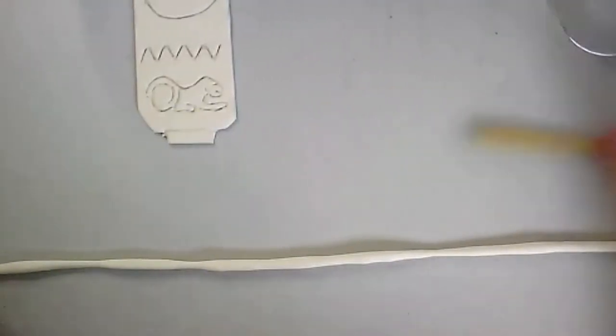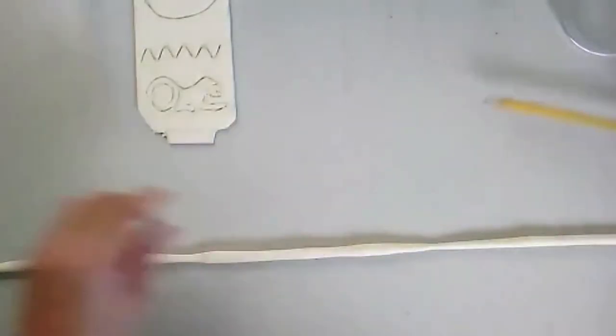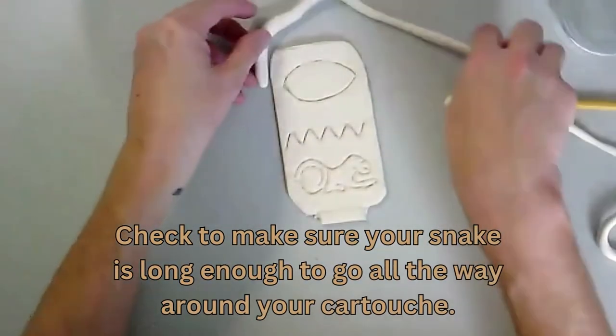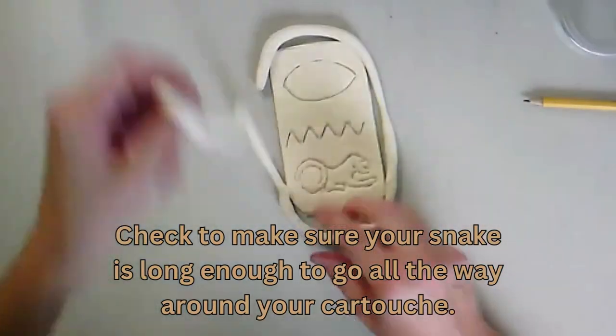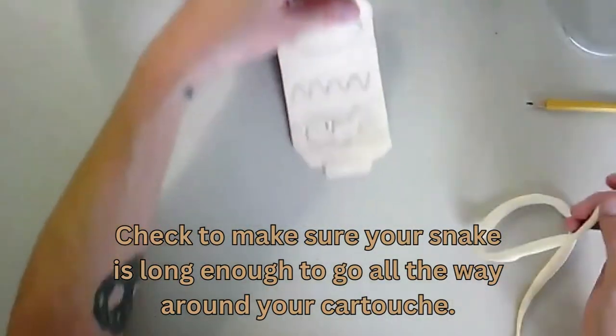So I have my really long snake here. It's about the width of a pencil. You can see about the same size as the pencil. I'm going to check. I'll make sure that my snake can go all the way around. So my snake can go all the way around my cartouche. This air-dried clay sticks very quickly if it gets too dry.